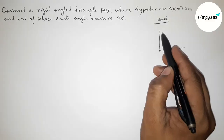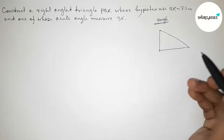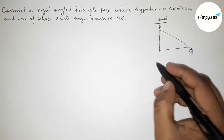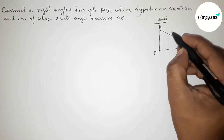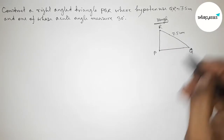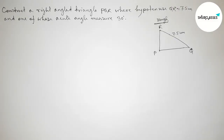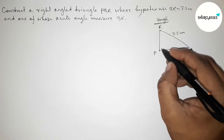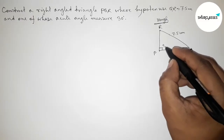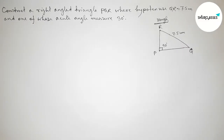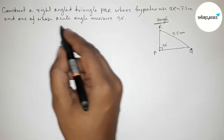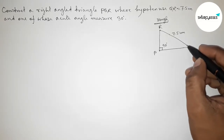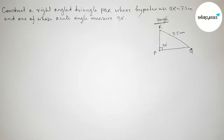First, drawing a right angle triangle roughly. Taking point Q, point R, and point P. The hypotenuse QR equals 7.5 centimeters. We know that the angle opposite to the hypotenuse of a right angle triangle is always 90 degrees. The given acute angle measures 30 degrees.